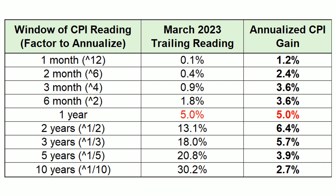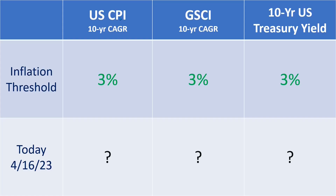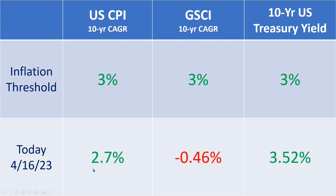Going back to the matrix: the U.S. CPI 10-year compound annual growth rate is 2.7% — below 3%. The Goldman Sachs Commodity Index is in deflation, far below 3%. The only one of the three above 3% was the 10-year U.S. Treasury yield at 3.52%. So only one of these three measurements is above 3%, and therefore inflation is not high. People who actually look at data can see that inflation is not high and is not even at the optimal level.